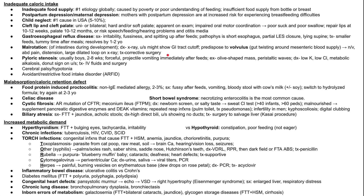Next is pyloric stenosis, which usually happens in boys from two to eight weeks. The classic presentation is forceful projectile vomiting — not just spitting up, but vomiting that goes fast and far. Exam may show an olive-shaped mass, though this isn't always present. You'll also see peristaltic waves — the stomach contracting against a tight pyloric sphincter. Blood work shows low potassium, low chloride, and metabolic alkalosis from vomiting. Ultrasound shows a donut sign. Treatment is IV fluids and surgery to cut open the sphincter.